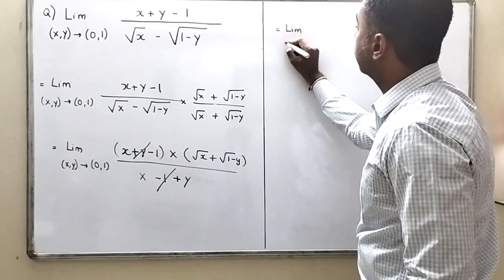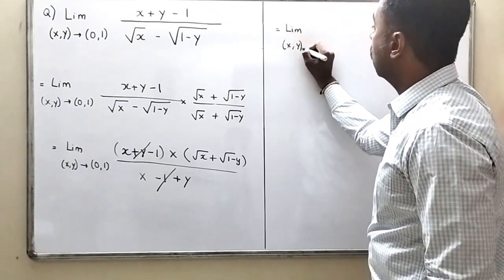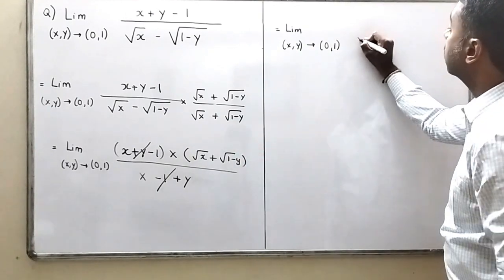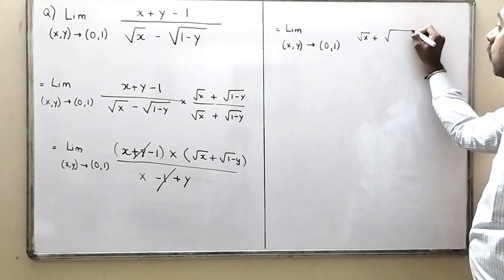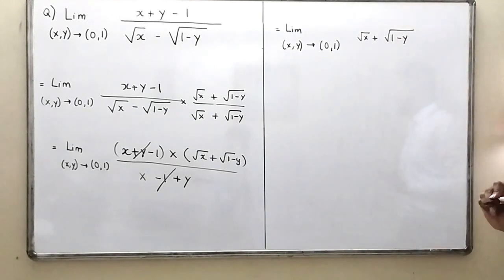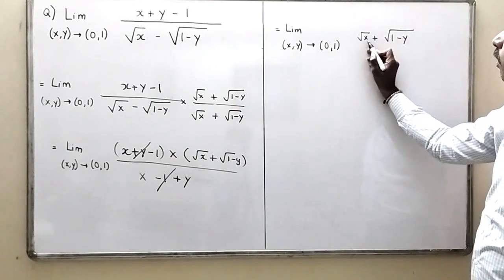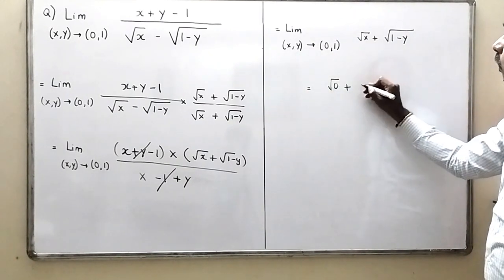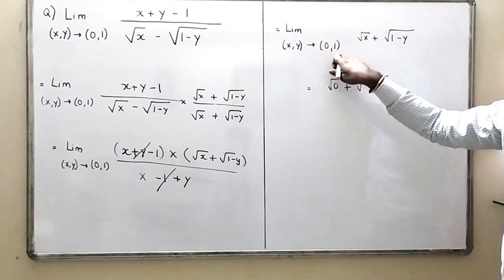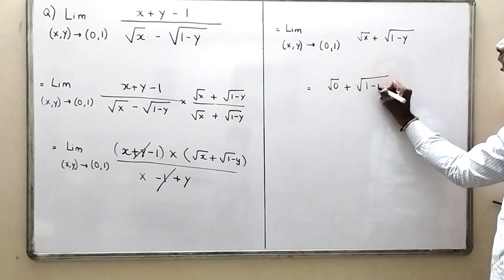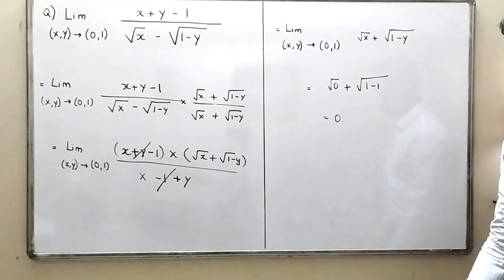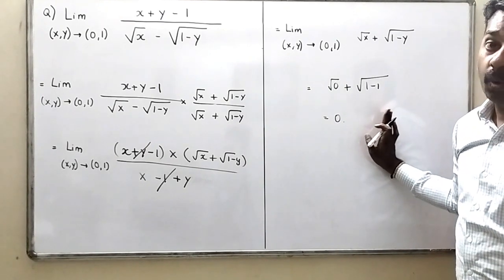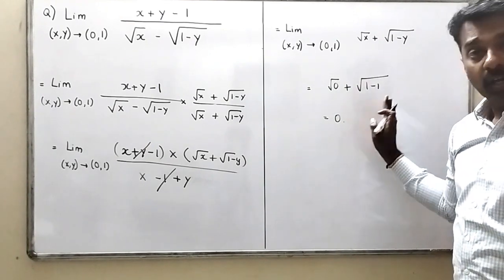After cancellation, the limit becomes limit (x,y) → (0,1) of just (√x + √(1−y)). Substituting directly: √0 + √(1−1) = 0 + 0 = 0. So the final limit equals 0. This is how you evaluate problems involving simultaneous limits.